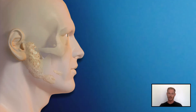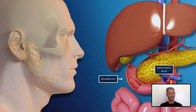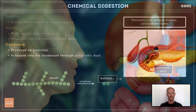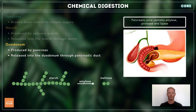The salivary amylase begins the process, but it continues further down the line in the first part of the small intestine, the duodenum. Here, pancreatic juice containing amylase, as well as proteases and lipase, is released into the duodenum through the pancreatic duct.